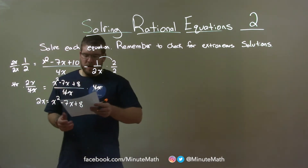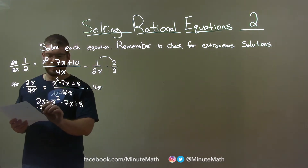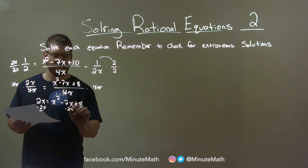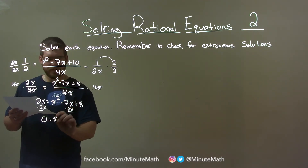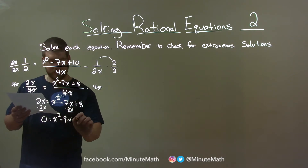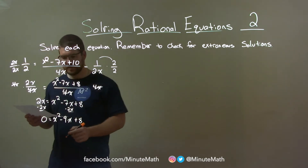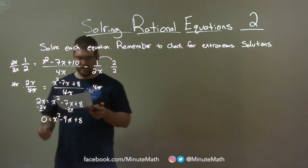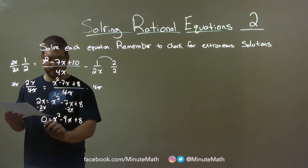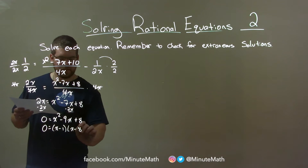Now let's get everything to one side. Subtract 2x from both sides, and we're left with 0 equals x squared minus 9x plus 8. Let's factor that. What multiplies to positive 8 but adds to negative 9? That's negative 1 and negative 8.